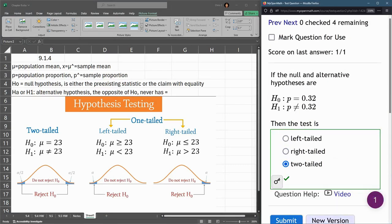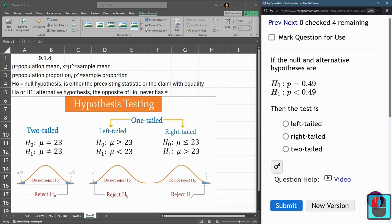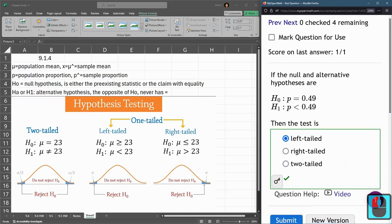And now I'm looking for a less than. Here we go. So p is less than 49. So the test is, in this case, we're right here. So we're looking at a left-tailed to see if it's too small.